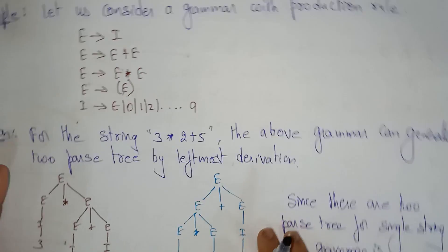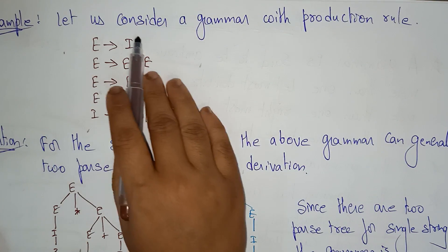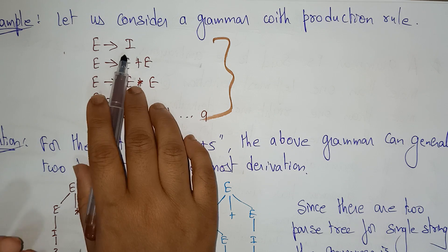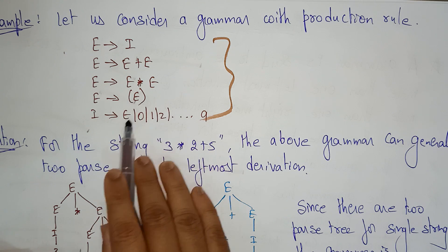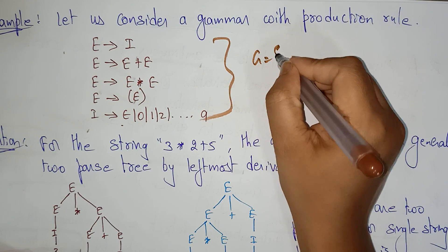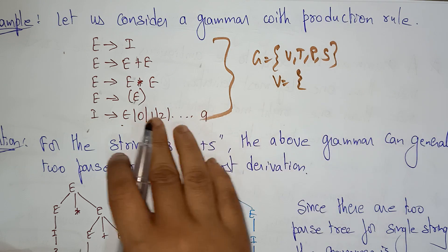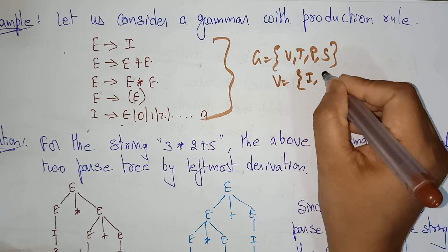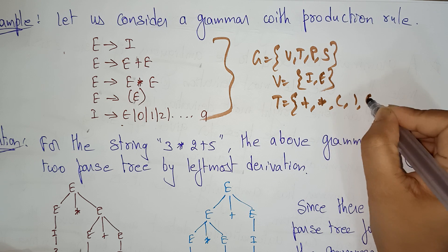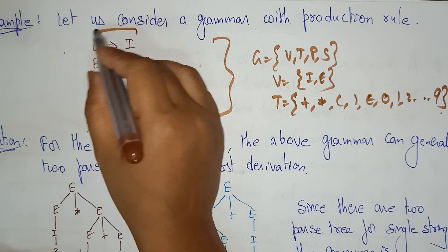Let me take one simple example to explain ambiguity. Consider a grammar with the production rules: E → I | E+E | E*E | (E), and I → 0 | 1 | 2 | ... | 9. This is a context-free grammar where V (non-terminals) = {E, I}, the terminals are {+, *, (, ), 0–9}, P is the set of production rules, and E is the start symbol.